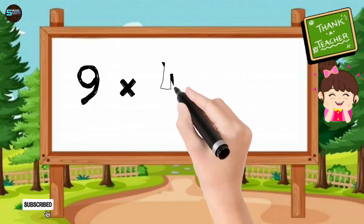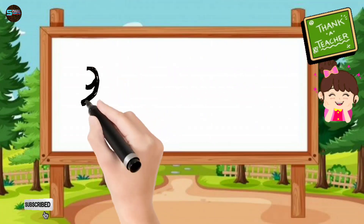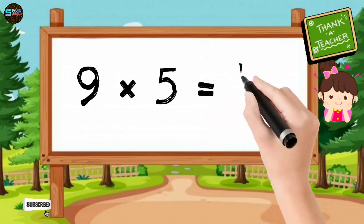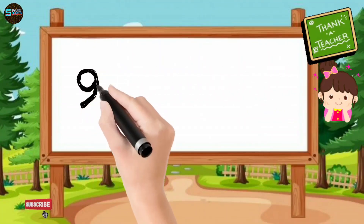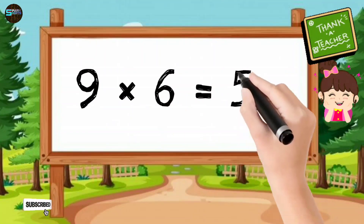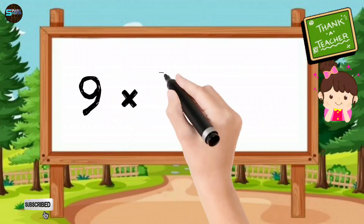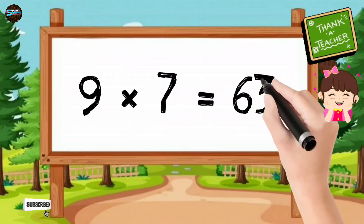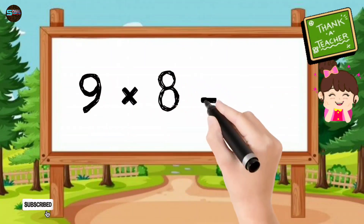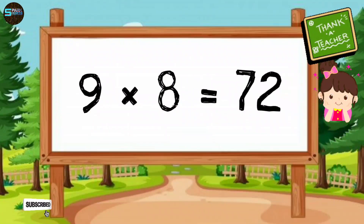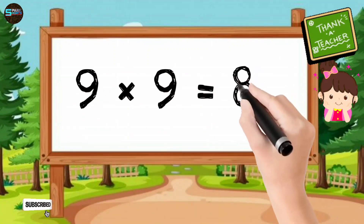Now let's learn table of 9. 9 1s are 9. 9 2s are 18. 9 3s are 27. 9 4s are 36. 9 5s are 45. 9 6s are 54. 9 7s are 63. 9 8s are 72. 9 9s are 81.